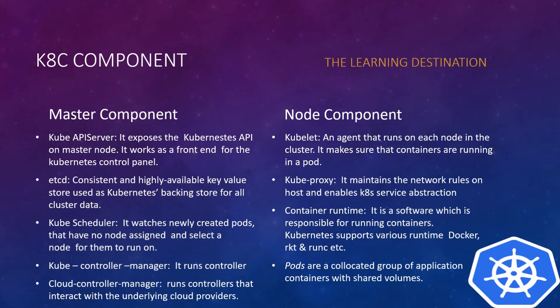Kube scheduler watches newly created pods that have no node assigned and selects a node for them to run on. It takes responsibility for deciding which node is assigned to which pod, whether a newly created pod has a node added or not. Kube controller manager runs controllers. Cloud controller manager runs controllers that interact with the underlying cloud providers.